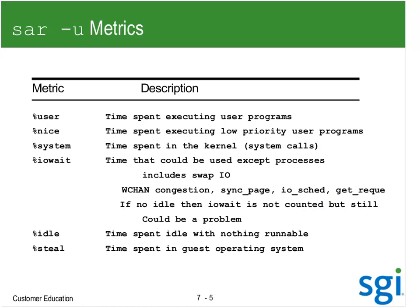Reviewing the metrics: we have user time, which we profile with perf top or ps-run. Nice time is user CPU utilization running under a low priority — batch queues might have a low priority queue, and cron events like the find for the locate utility might run under a nice value. Then we have system time — time spent in the kernel — where we'll use perf top and top sys.